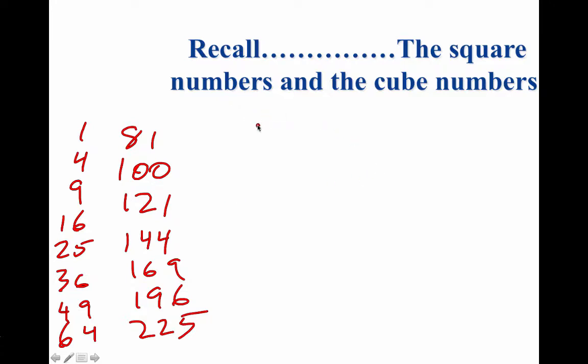Cube numbers, the only ones we're going to really keep track of are 1 cubed is 1, 2 cubed is 8, 3 cubed is 27, 4 cubed is 64, 5 cubed is 125, that's raising something to the third power.